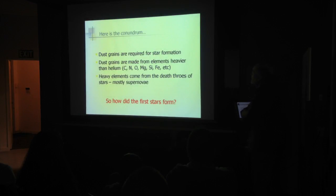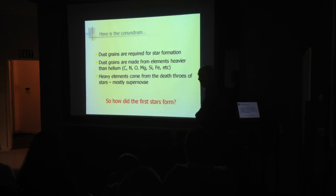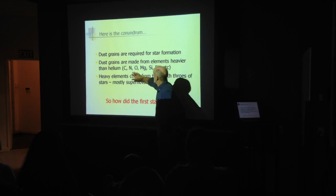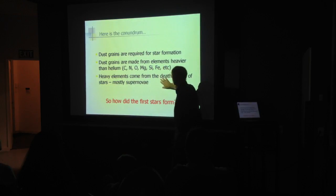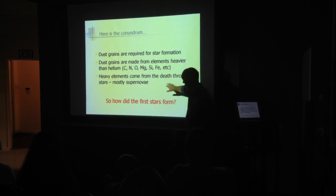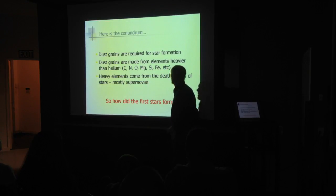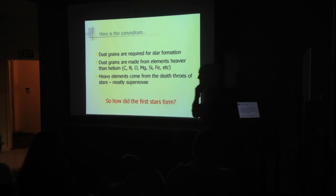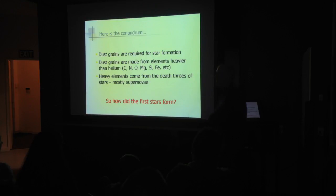So here's the conundrum: dust grains are required for star formation — you can't take them away. But they're made of elements heavier than helium — stuff made from stars, ejected in the throes of stellar death, mainly supernovae. So how did the first stars get going? It's a bootstrap problem, as mathematicians would say.